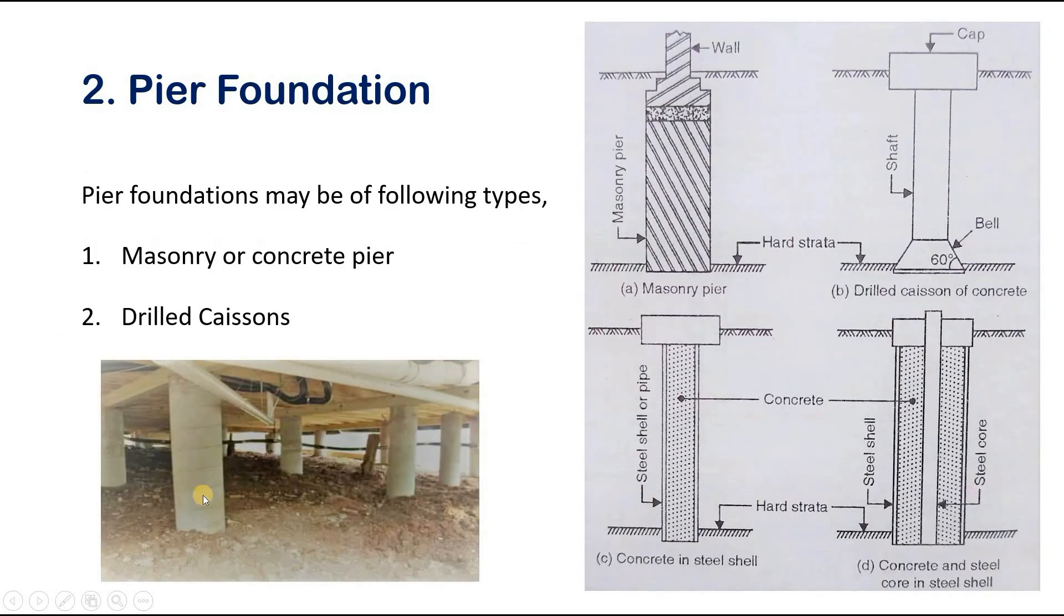Pier foundations may be of following types: masonry or concrete piers, next drilled caissons. When a good bearing stratum exists up to five meters below ground level, then masonry or concrete pier is used.